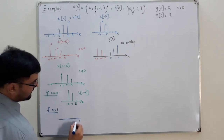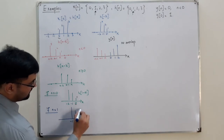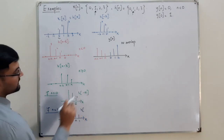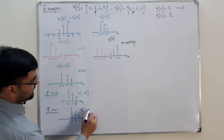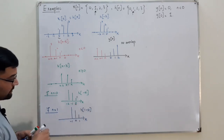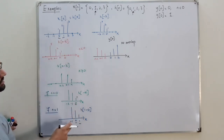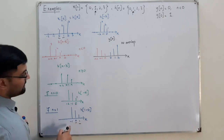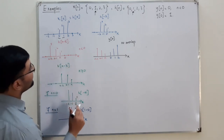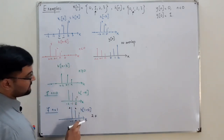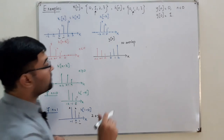If n equals 1, h(1 minus k) is located at 1, 0, and minus 1. The product exists at points 0 and 1. At k=0: x(0)=1 times h(1)=2 gives 2. At k=1: x(1)=2 times h(0)=1 gives 2. So y(1) equals 4.